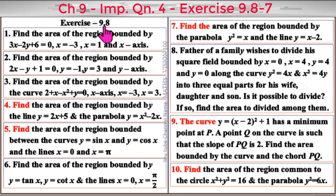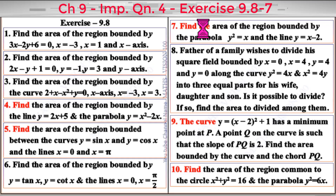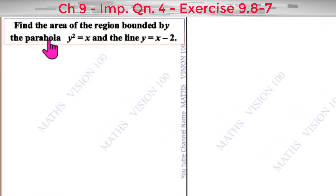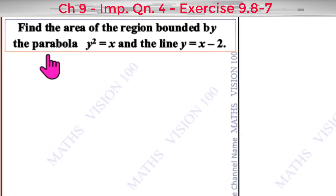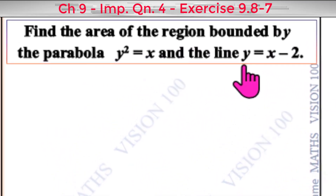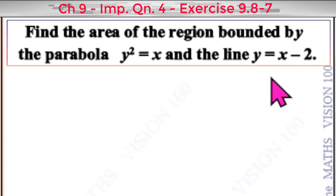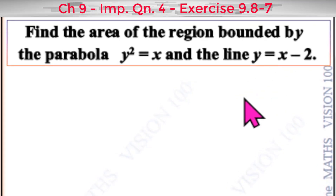Exercise 9.8, Question No. 7. Find the area of the region bounded by the parabola y squared equal to x and the line y is equal to x minus 2. Solution.